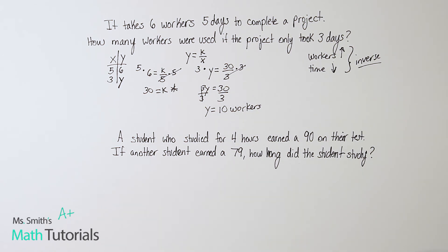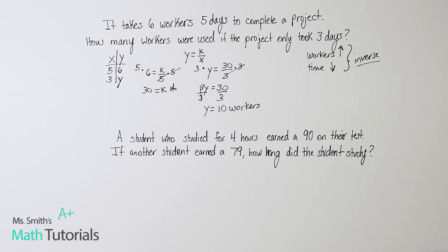A student who studied for four hours earned a 90 on their test. If another student earned a 79, how long did the student study? Now, I feel like this is a good time to point out that these are just predictions, right? We know that there's a lot of things that go into a test grade or completion of a project that go beyond just number of hours study or number of workers. You know, there's a lot of other factors at play. It's important to point out these are not guarantees. These are just predictions based on previous outcomes. Okay, so keep that in mind.